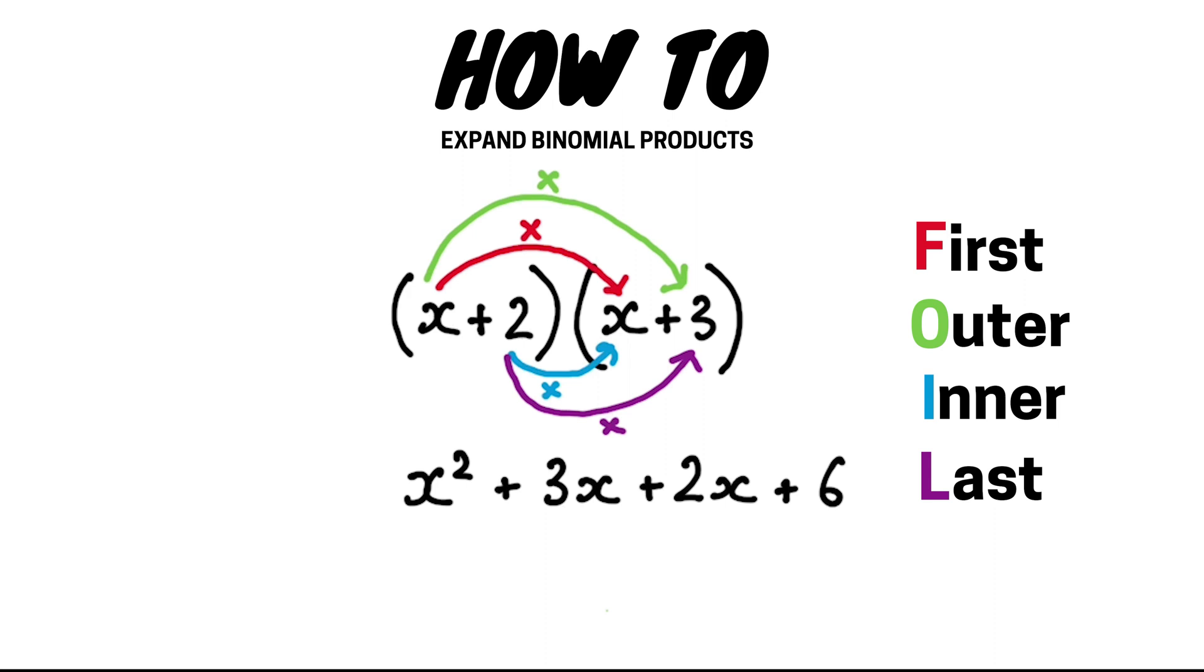We then must simplify the expression by collecting the like terms, so 3x and 2x are like terms, therefore our simplified expression is x squared plus 5x plus 6.